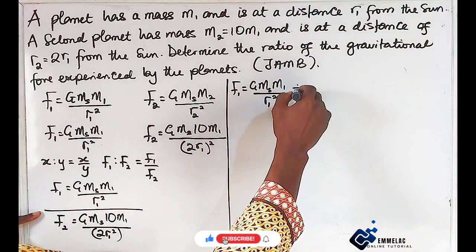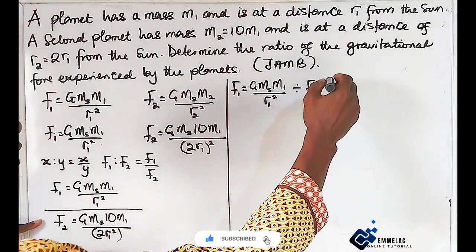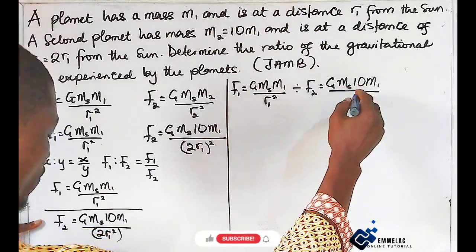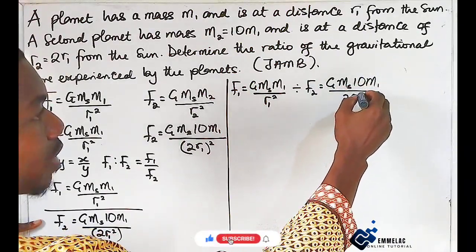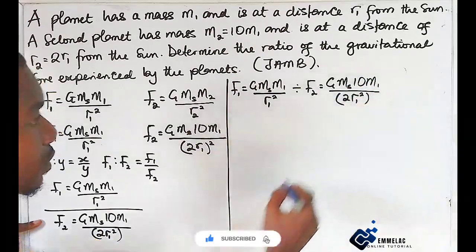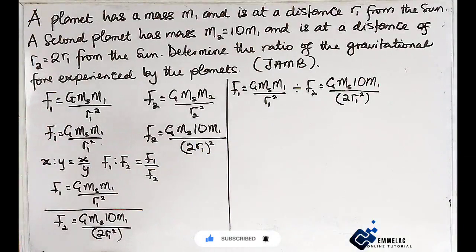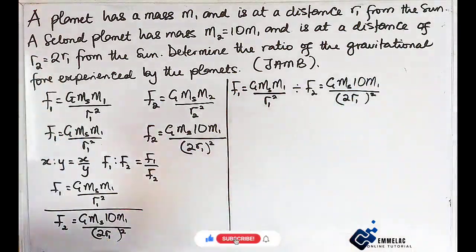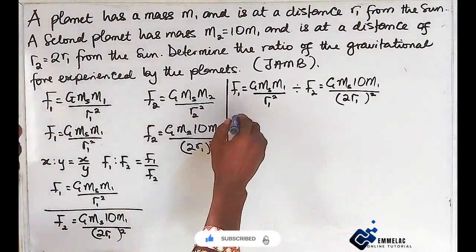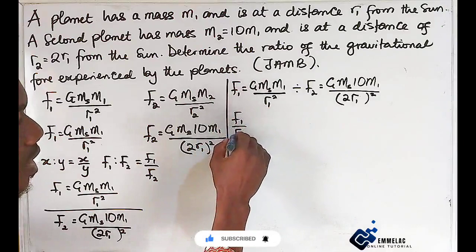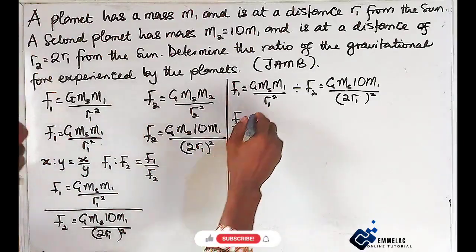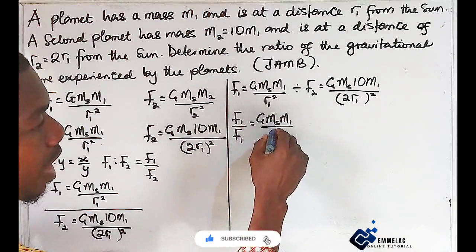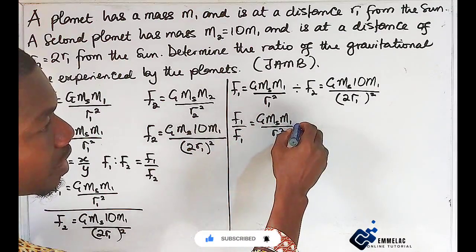So F1/F2 equals GMsm1/r1² times, and we have to flip this fraction because of the division, so (2r1)² over GMs(10m1).